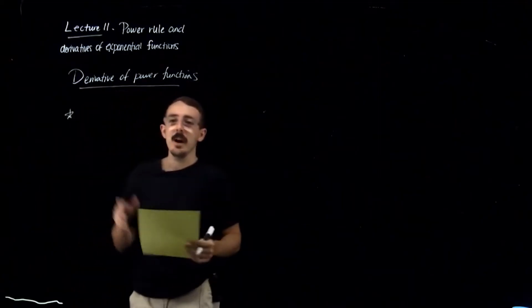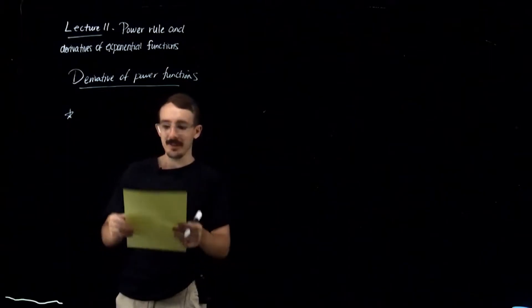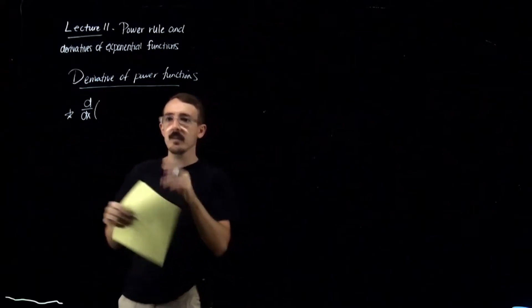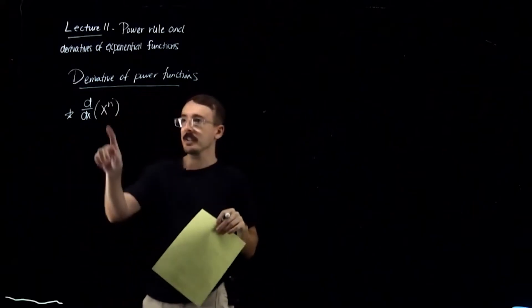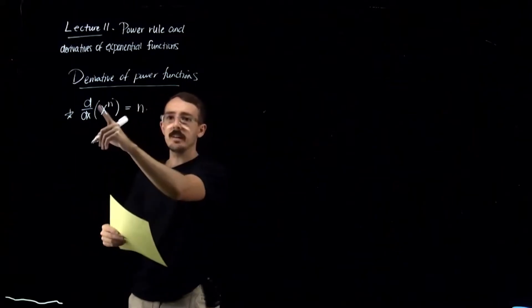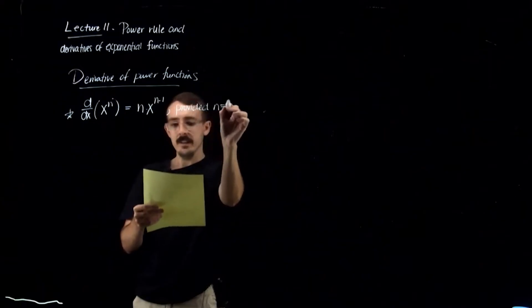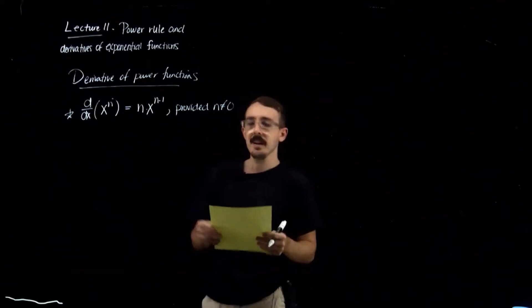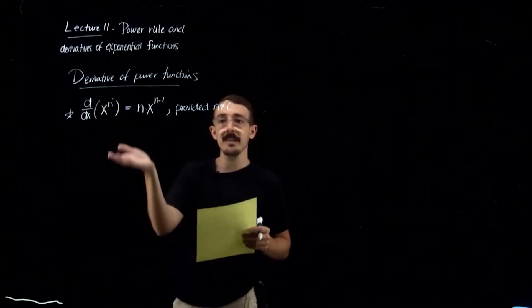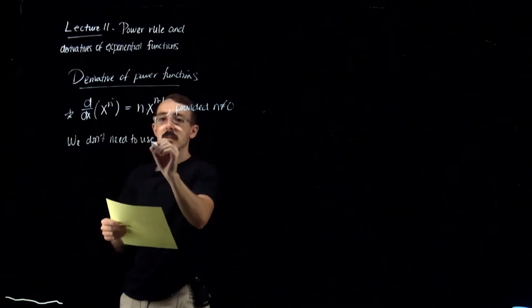This is our very first rule — over time we're going to build up many different rules, and these should all be committed to memory to really speed up the process for finding derivatives. So d/dx — remember from the last video, this is an operator. The derivative of a power function x^n is equal to n times x^(n-1), bringing the n in front and subtracting one from the power, provided n is not equal to zero. This is much easier than writing out the formal definition of the derivative using the limit and simplifying.